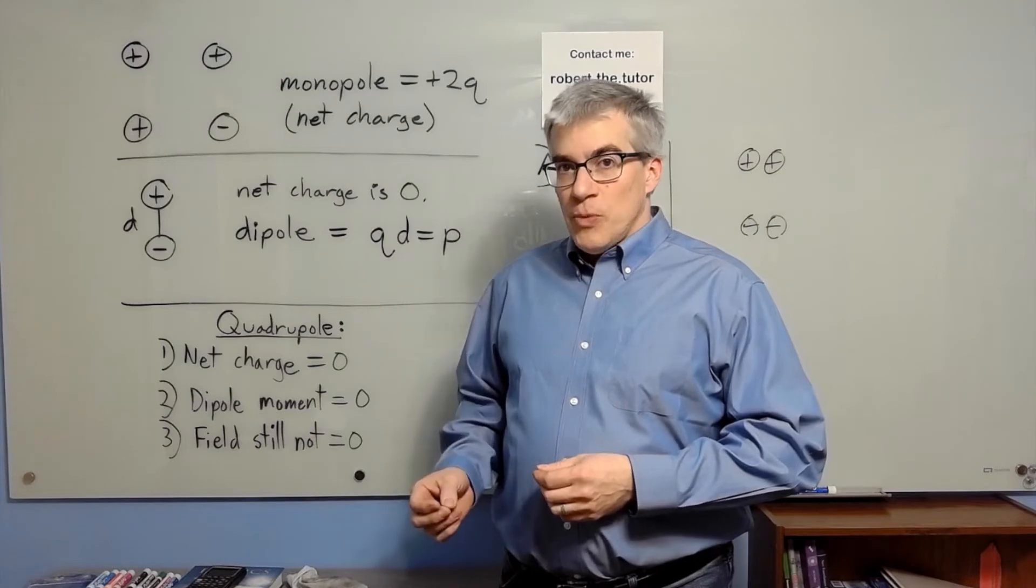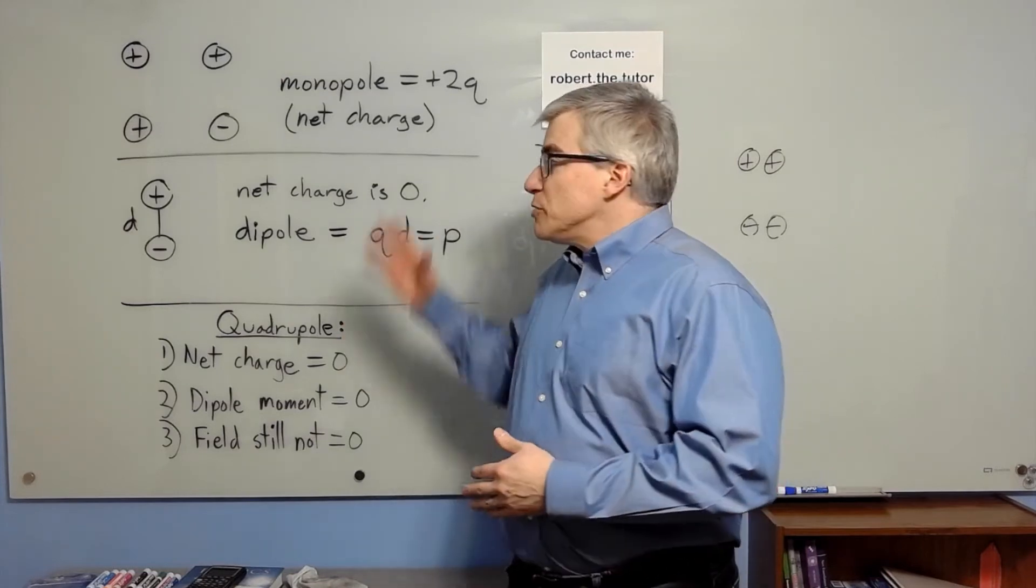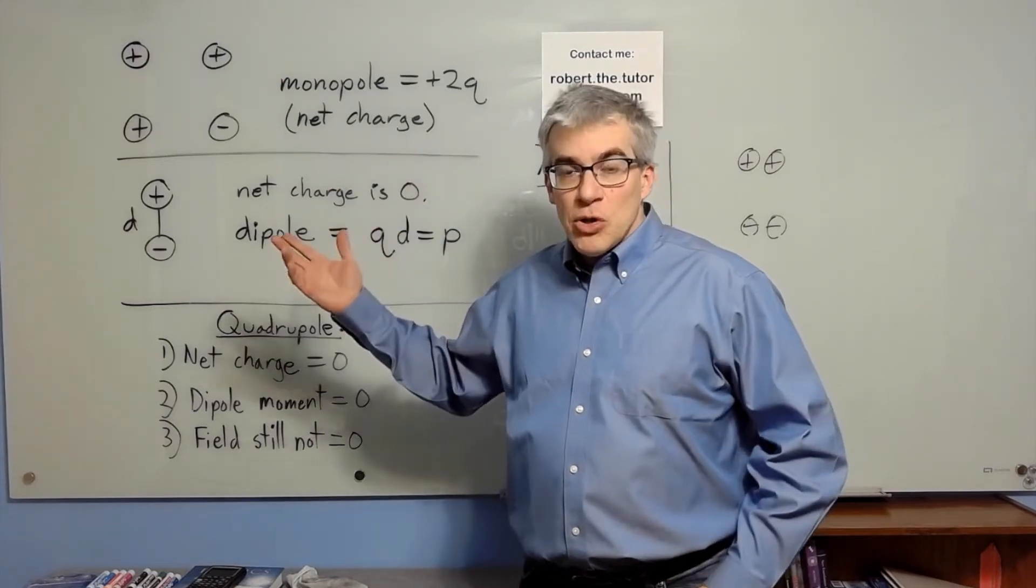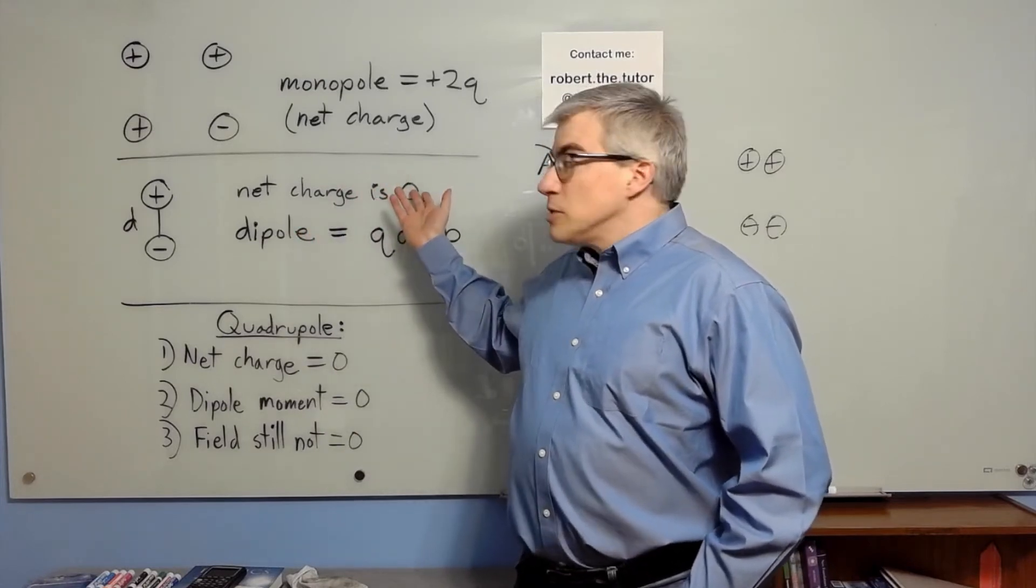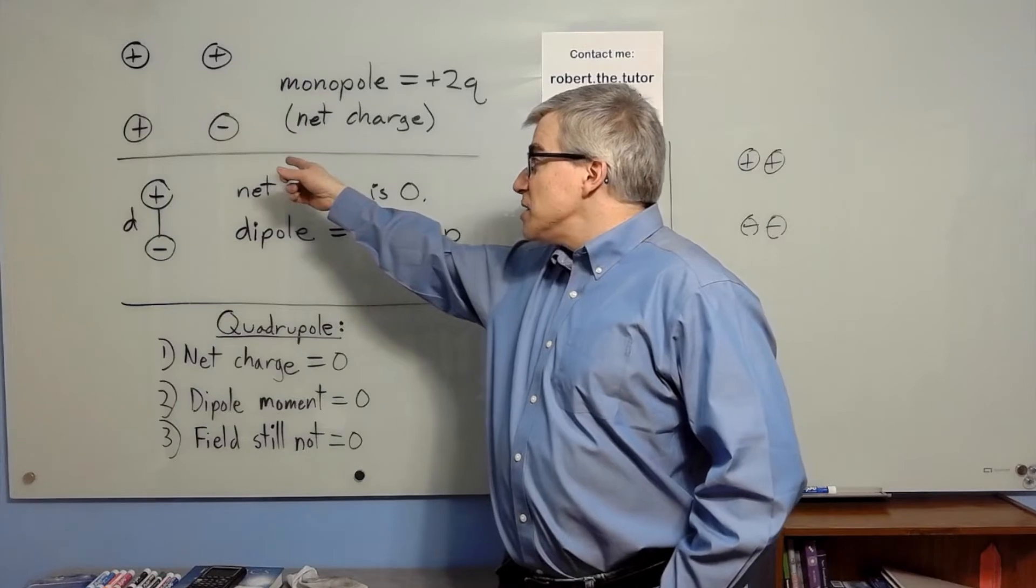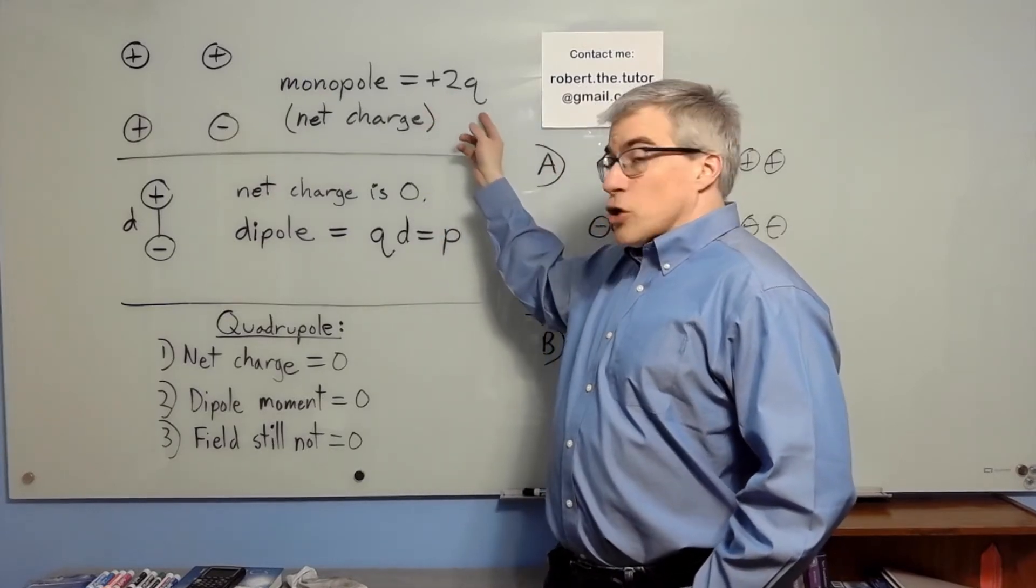What's an electric quadrupole? You can have an arrangement of charge that we call an electric monopole, which just means you have a net charge. The charge isn't zero, so you have plus, plus, plus, minus. The monopole charge or monopole moment would be plus 2q.